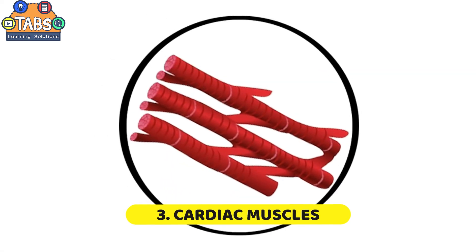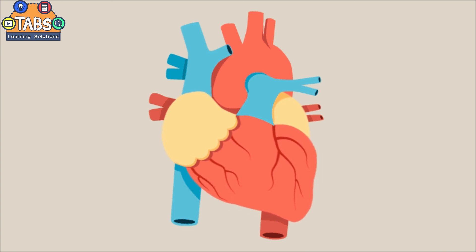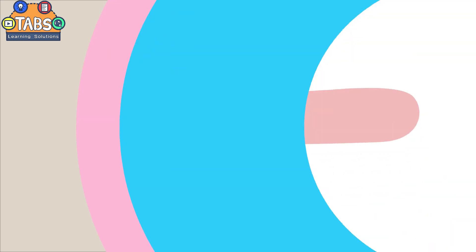The cardiac muscles cannot be controlled consciously and they are found only in the heart. And that's it! Now you know how the muscular system works.